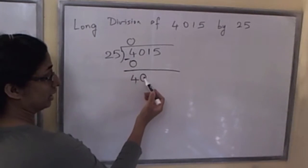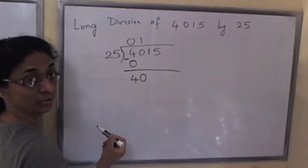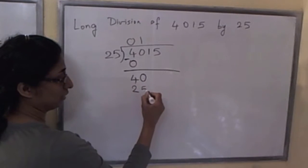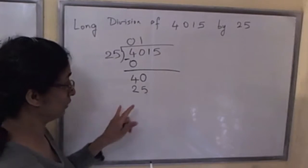We put 1 in the same column as the 0 that we brought down. So 25 times 1 is 25. Convince yourself—we couldn't put 2 there because 25 times 2 would be 50, larger than 40.